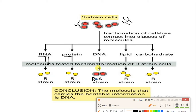In the third test tube, DNA was introduced where R-strain was already present, and I got to see that the R-strain got converted into a virulent strain called S-strain. In the fourth experiment, lipid was entered into the test tube with R-strain, and R-strain remained as it is. In the last experiment, carbohydrate was entered into the test tube with R-strain, and again the R-strain remained as it is.